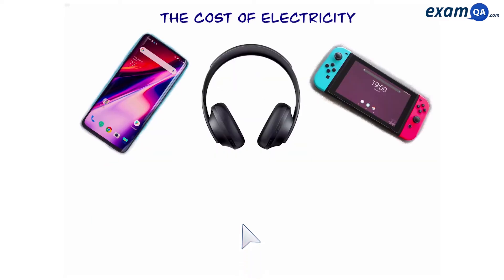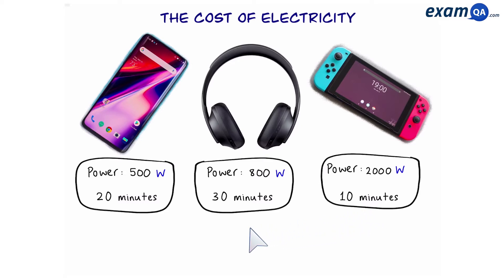Here we have three devices. On the left we have a phone which has a power of 500 watts. We have some headphones which have a power of 800 watts and a games console which has a power of 2000 watts. Let's say we use the phone for 20 minutes, the headphones for half an hour, and we play games for 10 minutes on our games console. In which of these scenarios have we used the most energy? We want the answer in kilojoules.